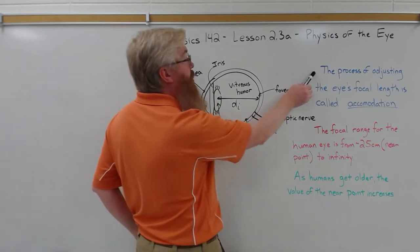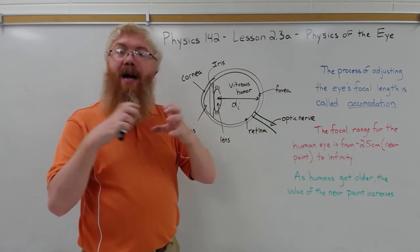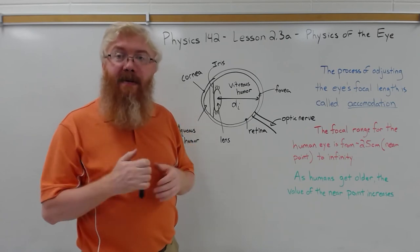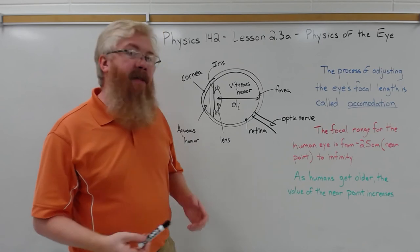That's what this lens and the muscles around this lens, the cilia, do. The process of adjusting the eye's focal length is called accommodation. Your eye basically goes through accommodation, changing shape and size to change the focal length of your eye system. Now this doesn't always work.